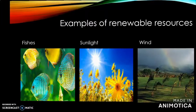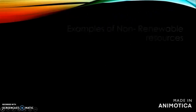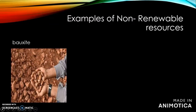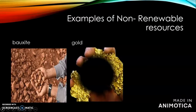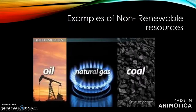Non-renewable resources are resources that have a fixed amount — there is a limit. Once you use up all of the allotted amount, it will not be replenished or replaced. Examples of non-renewable resources include bauxite, gold, nuclear energy, oil, natural gas, and coal. Once the amount that is allotted is used up, there is no more. The difference is: renewable resources are essentially infinite and can be replenished, while non-renewable resources cannot be replaced and have a finite limit.